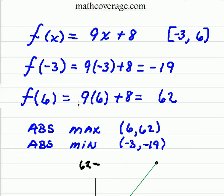In this particular problem, we are asked to find the absolute minimum and the absolute maximum of the function f(x) = 9x + 8 on a closed interval between -3 and 6.